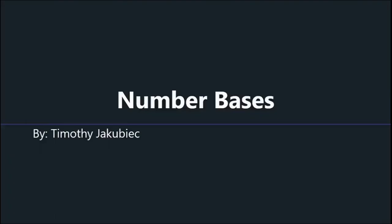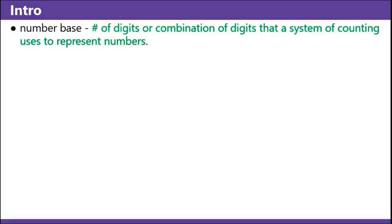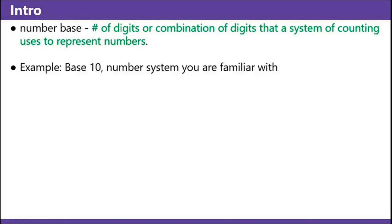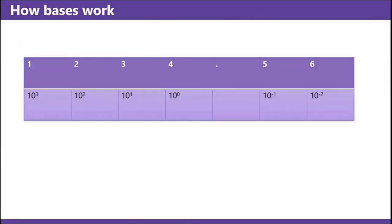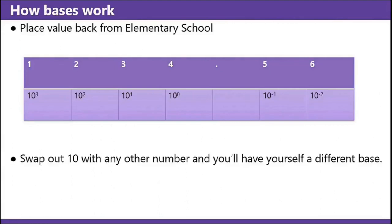Welcome back to Jakubication. This video is about number bases. A number base is a number of digits or combination of digits that a system of counting uses to represent numbers. Example: base 10 is the number system you're familiar with — 10 digits: 0, 1, 2, 3, 4, 5, 6, 7, 8, 9. How bases work: place value from elementary school. Swap out 10 in this chart with any other number and you'll have yourself a different base.